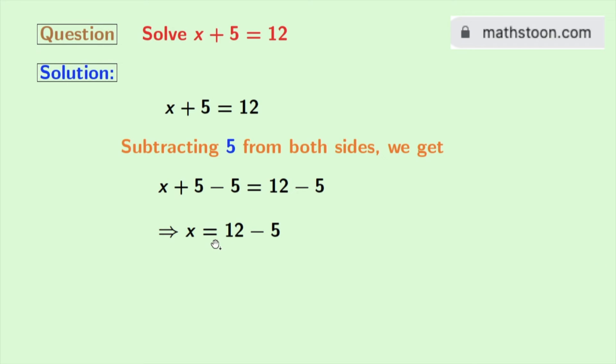And in the right hand side, we have 12 minus 5, which is equal to 7. So finally we get x is equal to 7. And this is our final answer.